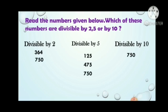800 — it is divisible by 2, divisible by 5 and divisible by 10. 628 — it is divisible by 2. 206 — it is divisible by 2. 508 — it is divisible by 2. 7009 — it is not divisible by any of the numbers 2, 5 or 10.